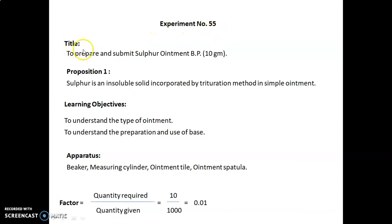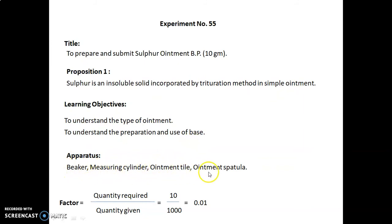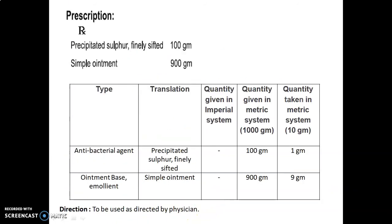Experiment number 55: The title of this experiment is to prepare and submit sulfur ointment BP — that is, according to the British Pharmacopoeia — 10 gram proposition. Sulfur is an insoluble solid incorporated by the trituration method in simple ointment. Learning objectives are to understand the type of ointment and the preparation and use of the base. Apparatus required: mortar, measuring cylinder, ointment tile, ointment spatula. Factor calculated: quantity required upon quantity given equals 10 upon 1000, which equals 0.01.